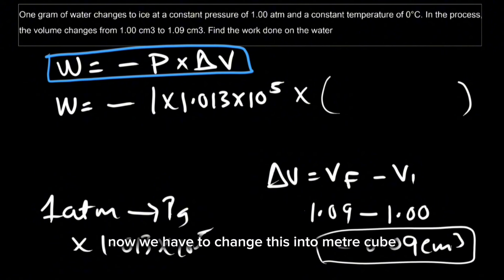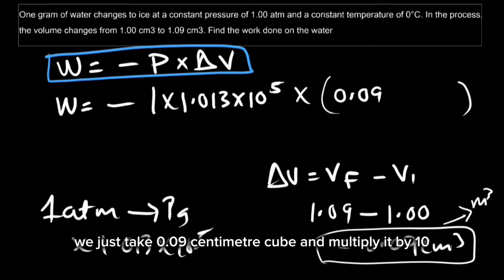Now we have to change this into meter cube. We'll just take 0.09 centimeter cube and multiply it by 10 power negative 6.